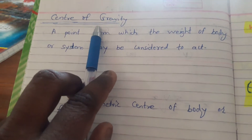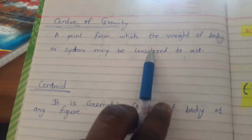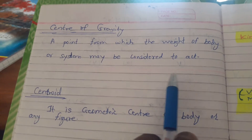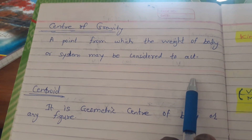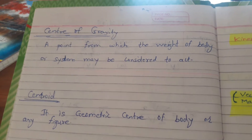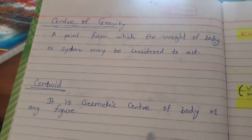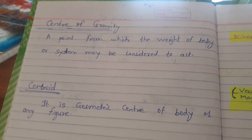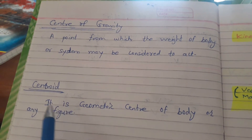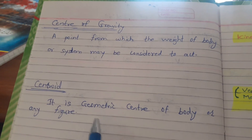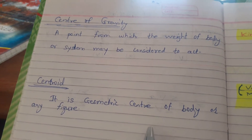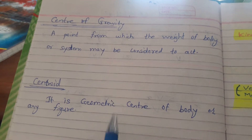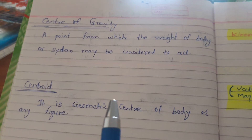Centre of gravity is the point from which the weight of a body or a system may be considered to act. The centroid is the geometric centre of the body or any plane figure, and centroid is applicable only for plane figures — those having only the area concept.